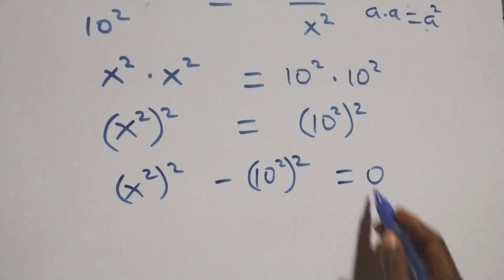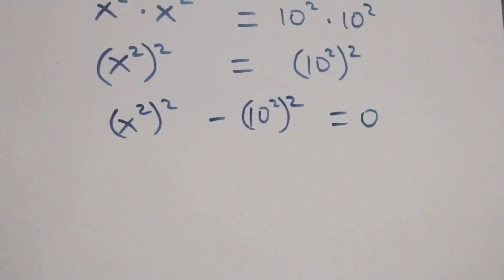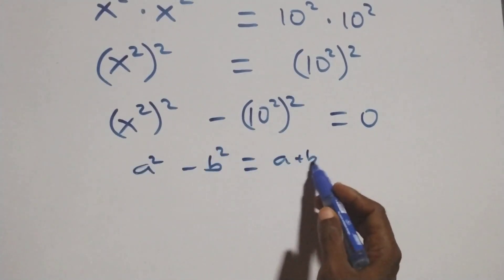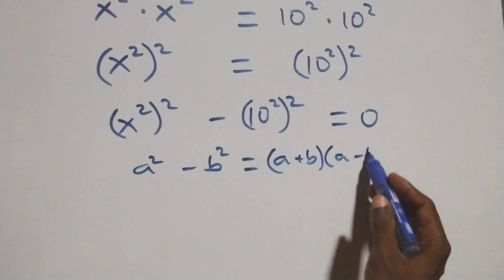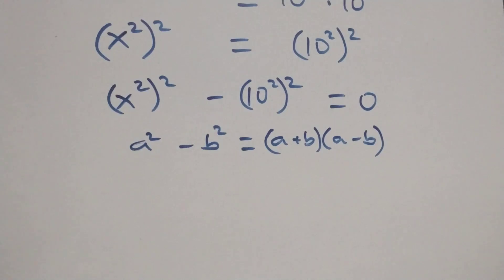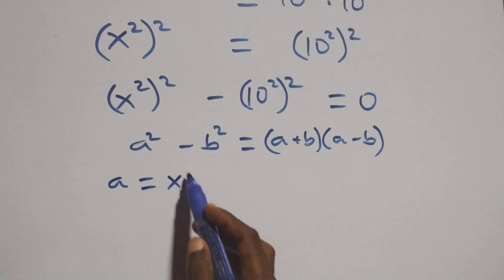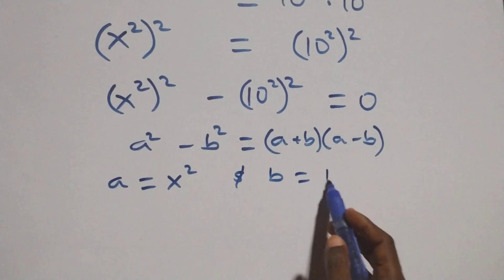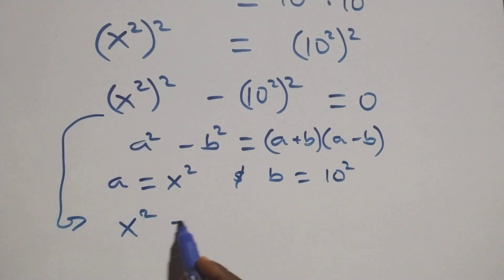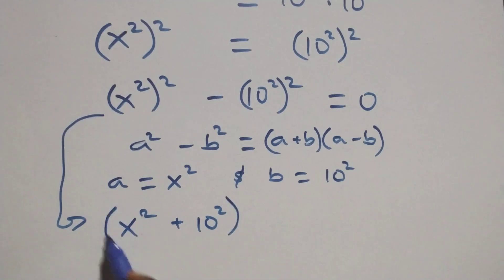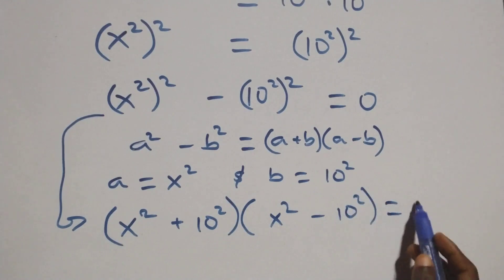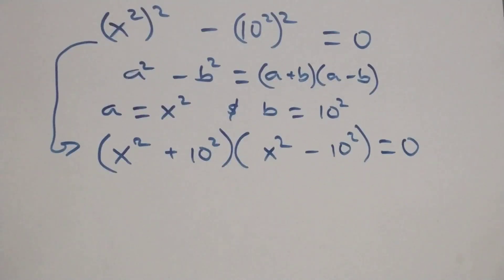Here, when we have a squared minus b squared, it can be written as (a + b)(a - b). Here, a stands as x squared and b stands as 10 squared. So what we have becomes (x squared + 10 squared)(x squared - 10 squared) equals zero.